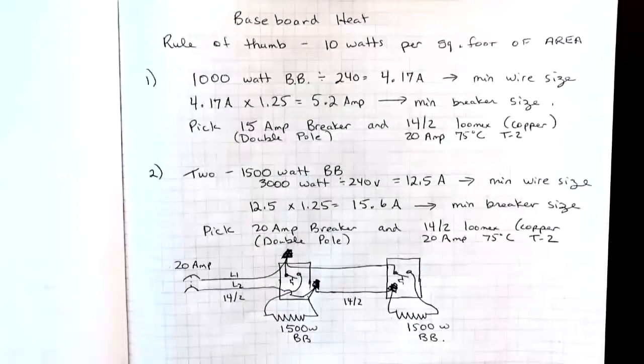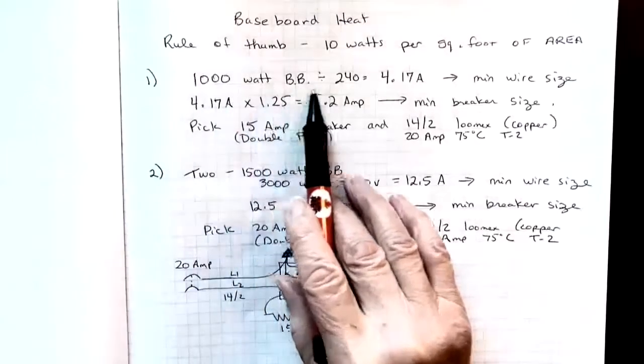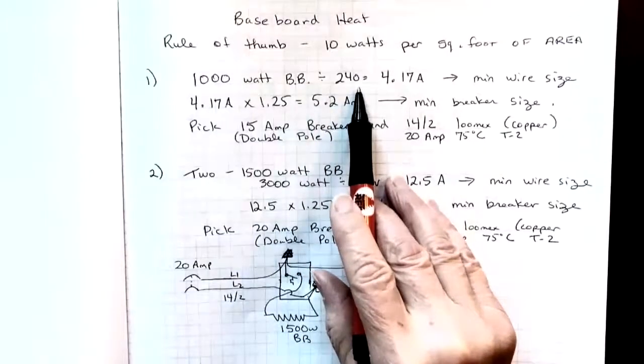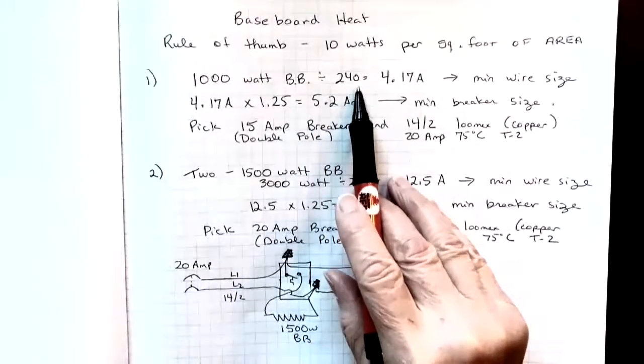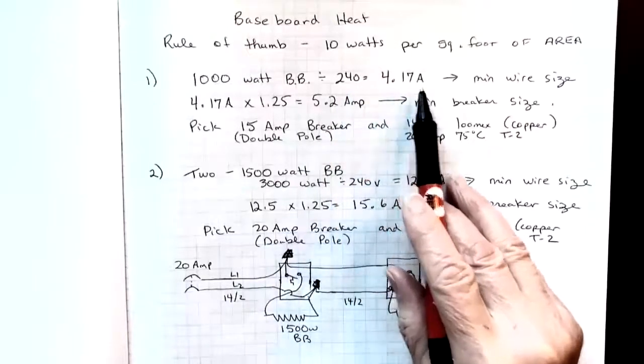Our first example then would look at that thousand watt baseboard heater. If that was the only thing on that circuit, say you were doing the renovation and adding a baseboard heater to this room, we would take 1000 watts divided by 240. Most of our baseboard heaters are 240, although you can buy 120 volt heaters as well, in which case you would have to divide it by 120 volts. That gave me 4.17 amps.